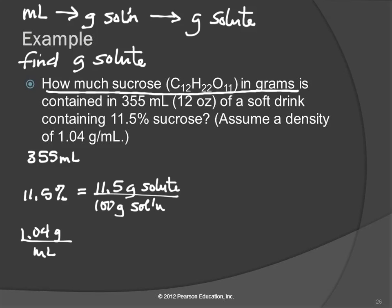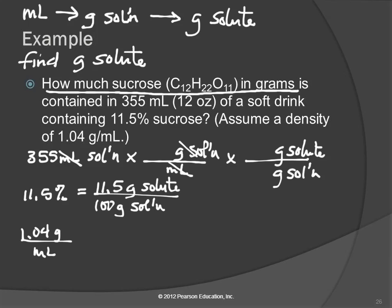So we'll take our 355 milliliters. That's the volume of the solution. And we're going to convert that to grams. We want to divide by milliliters and multiply by grams. That's going to be grams of solution. And the next step was to grams of solute. And then we want to divide by grams of solution. It's all about the units.